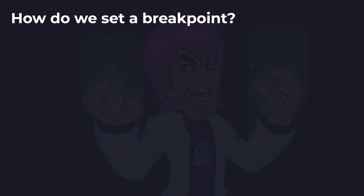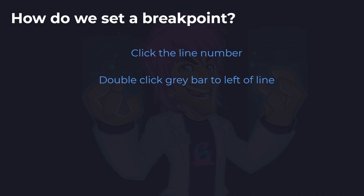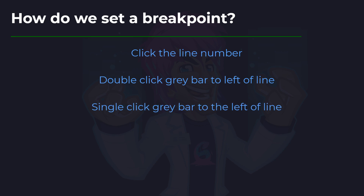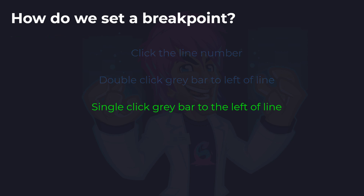Next up, how do we set a breakpoint? Do we click the line number, double click the grey bar to the left of the line, or single click the grey bar to the left of the line? This is when you want to add a breakpoint to code, somewhere for it to stop on. The answer is to single click the grey bar to the left of the line — this adds a breakpoint.